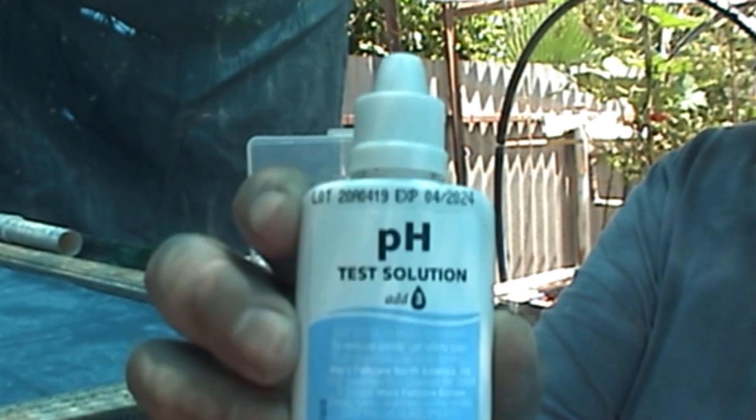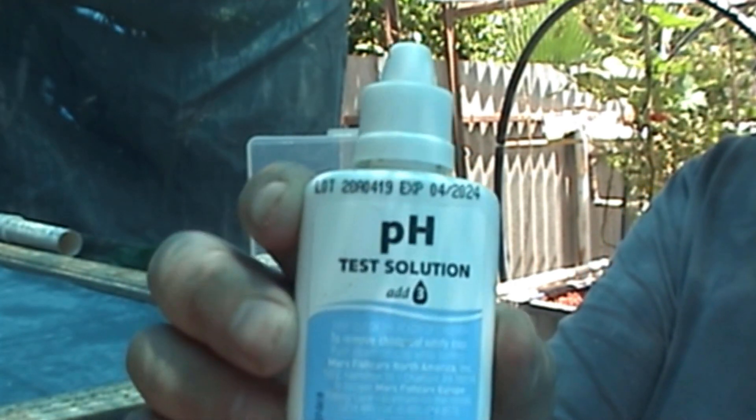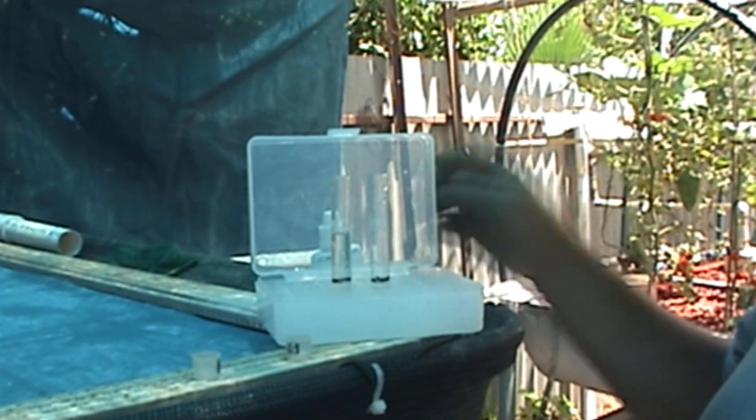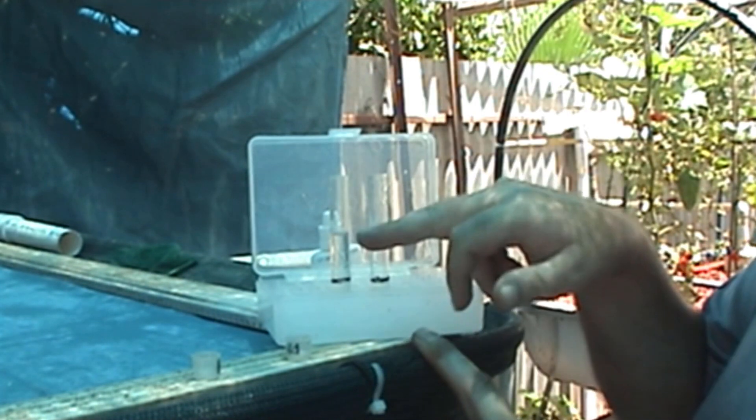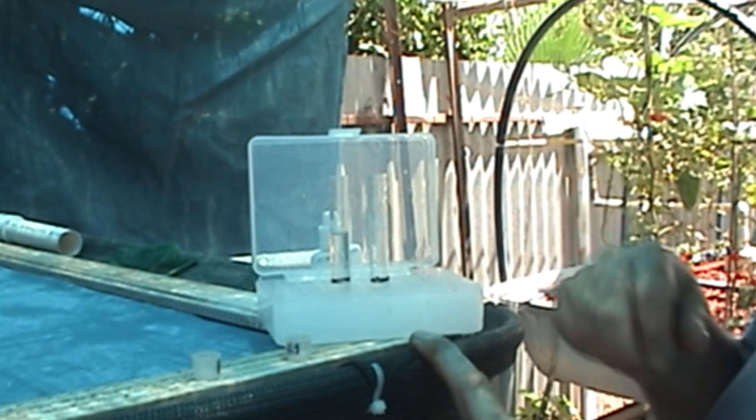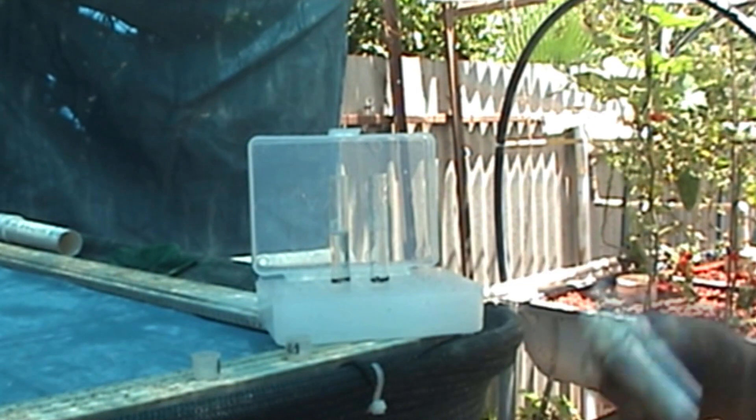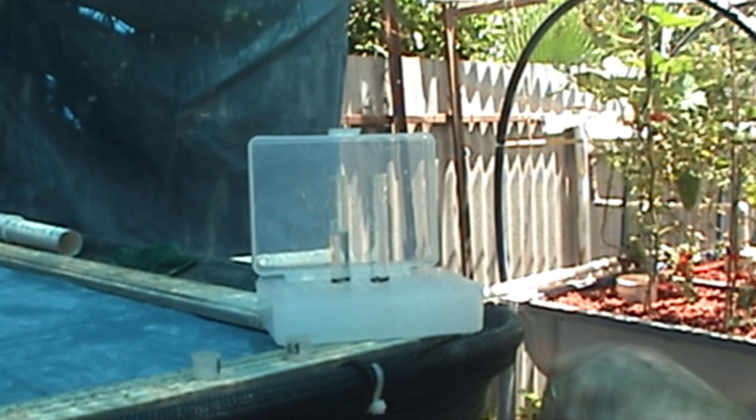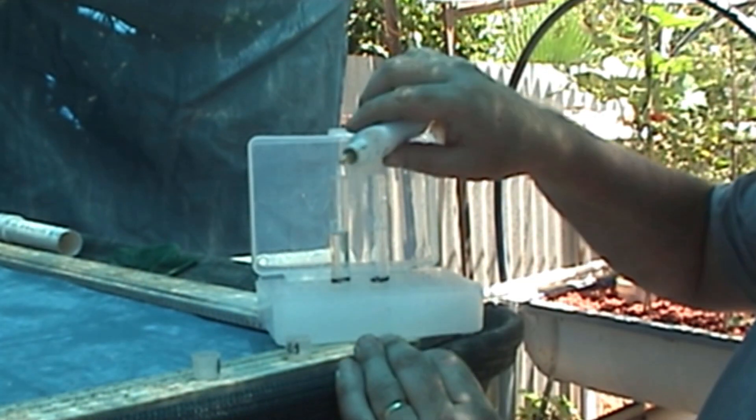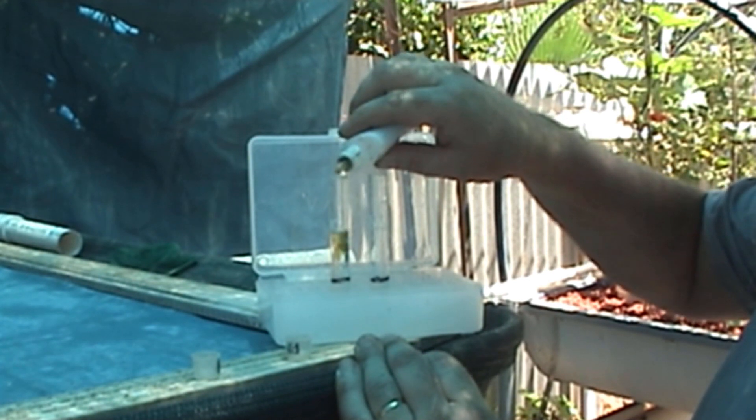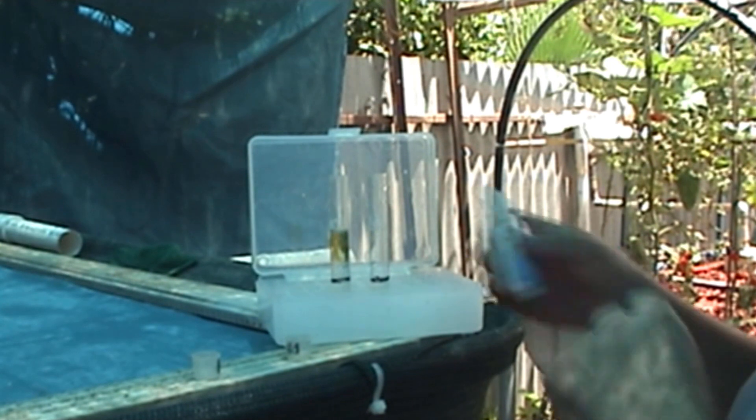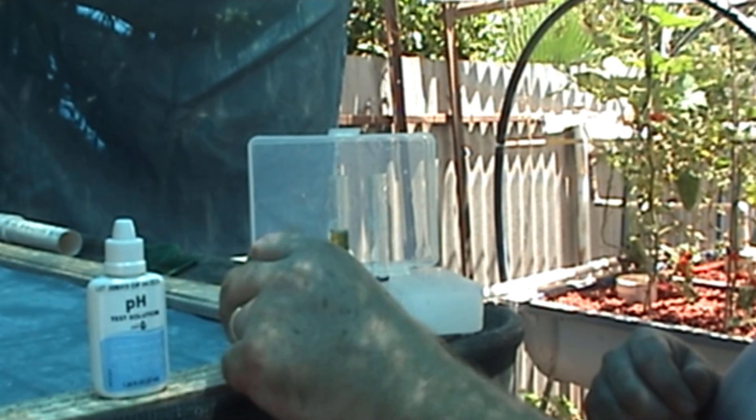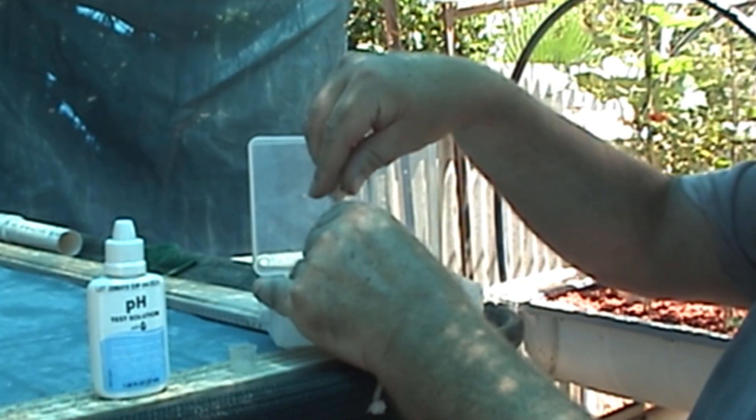The first test we're going to look at is pH, your normal pH, not your high pH but your normal pH test. I've filled up one vial to the proper level of where it's got to be. Now, I'll put the measurement, it says on here, put three in. I'll put three into that one. One, two, three. That's three drops. So, that's the normal pH test.